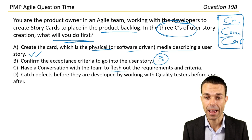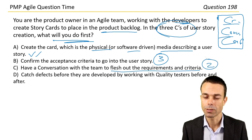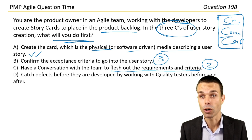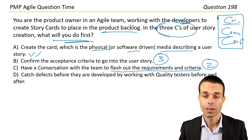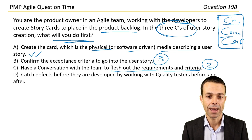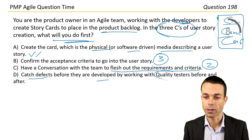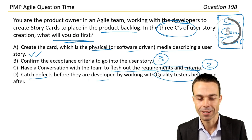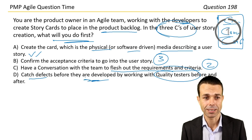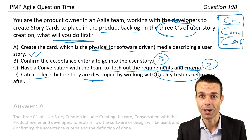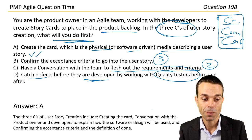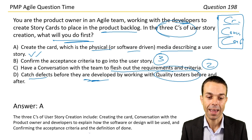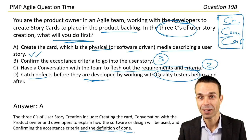Have a conversation with the team to flesh out requirements — that would be number two, because Agile prefers conversation over emails or written documents; ideally face-to-face or by phone. The last option — catching defects before development by working with quality testers — isn't really related to this. So let's go with answer A: create the card first, then have a conversation with the product owner and developers to explain how the software will be used, and finally confirm the acceptance criteria against the definition of done.